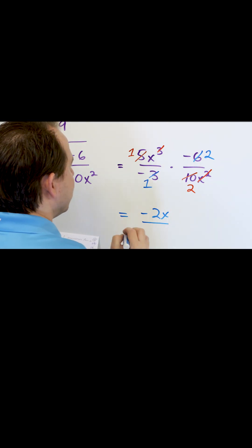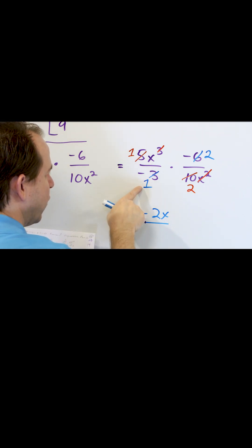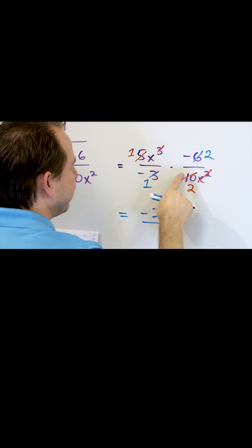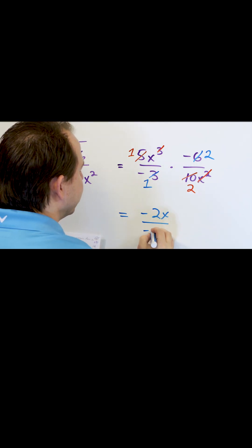And then on the bottom, what I'm going to have is, I have a negative, this is a 1, and then I have over here, the only thing left, I've already struck through everything, I only have a 2, so negative 1 times 2 is negative 2.